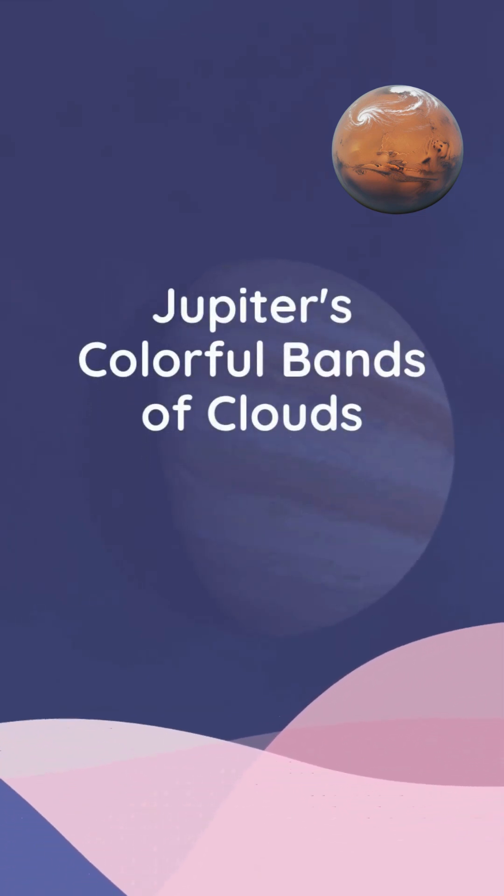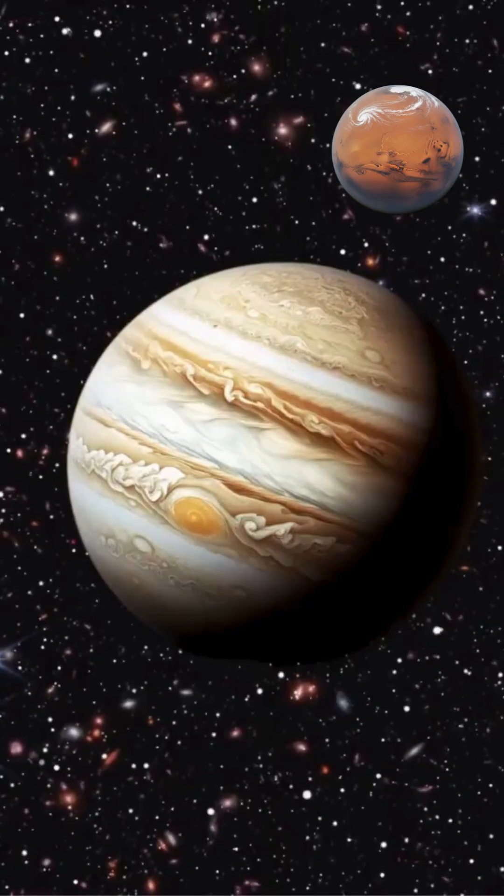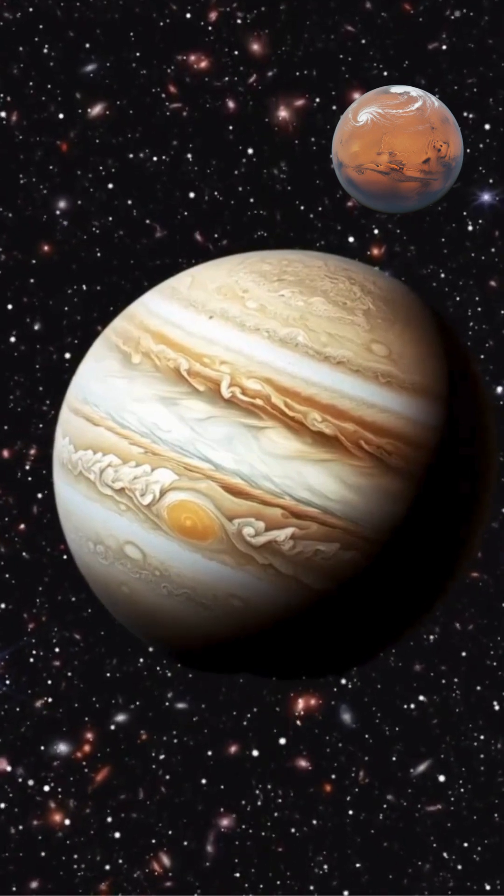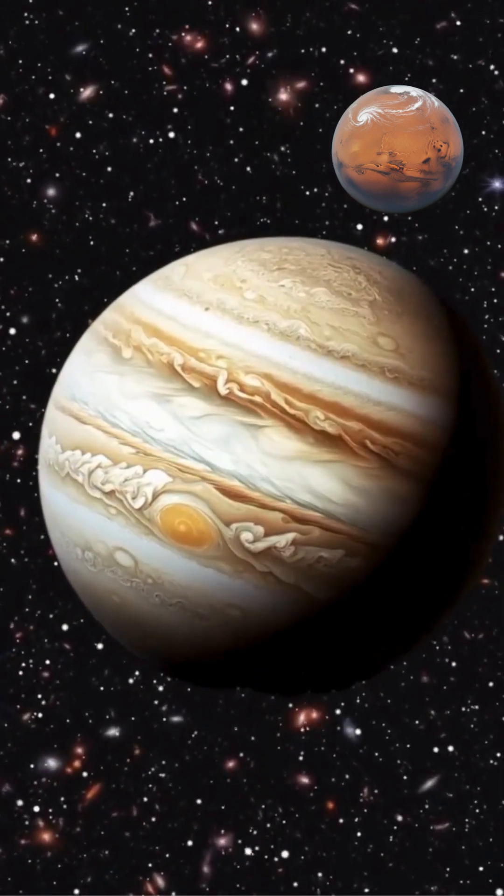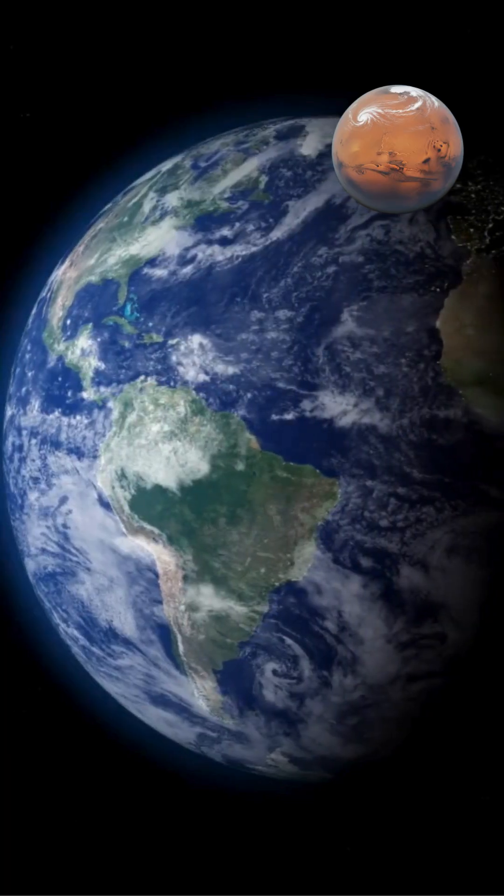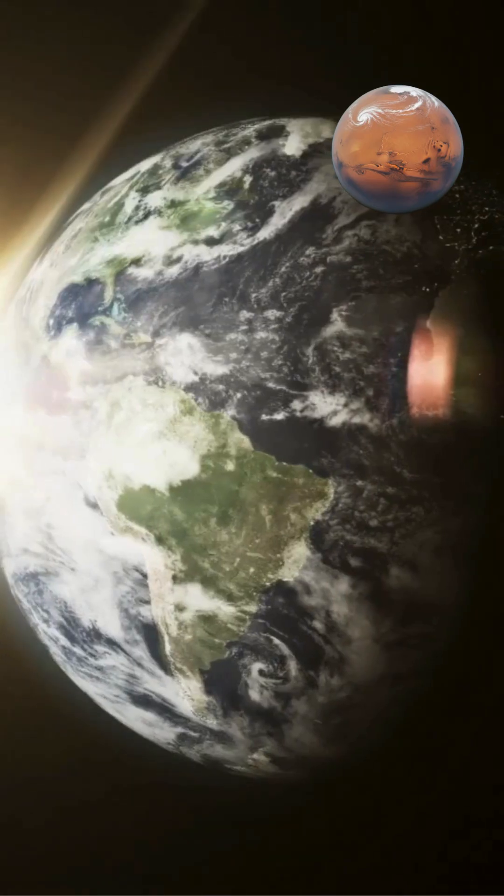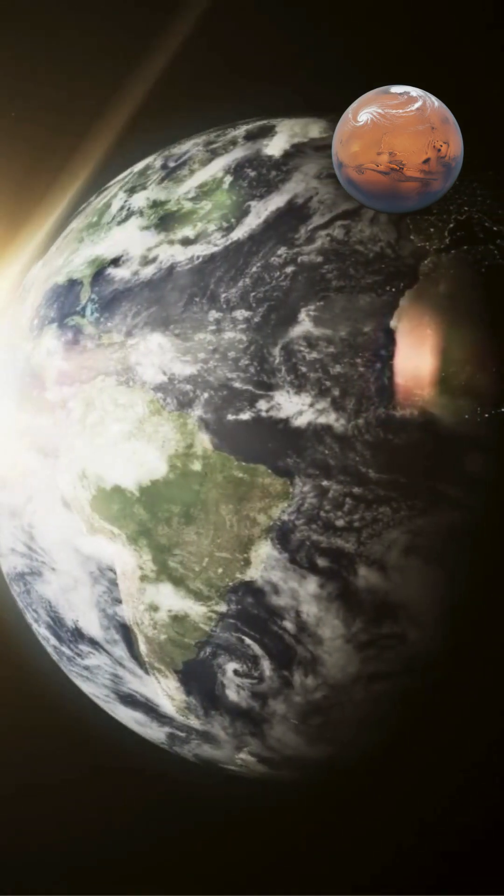Jupiter displays striking colorful bands of clouds that circle the planet in alternating light and dark stripes. These bands result from the planet's rapid rotation, atmospheric composition, and internal heat dynamics.